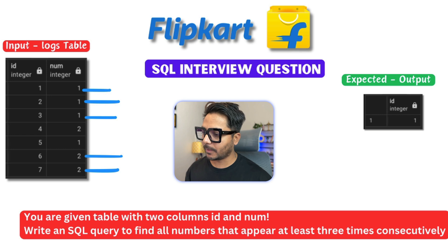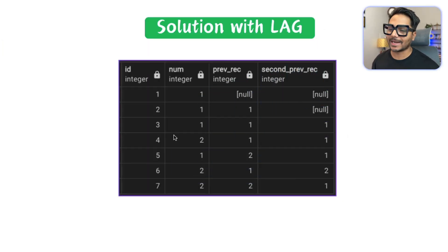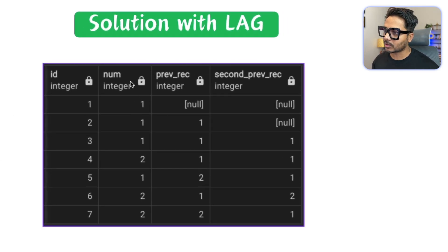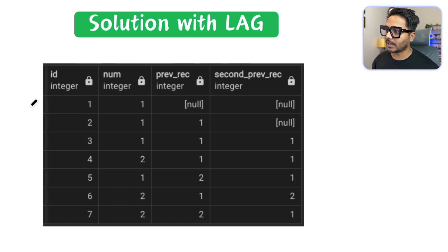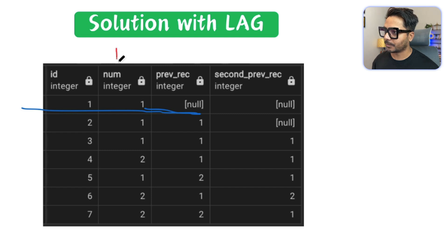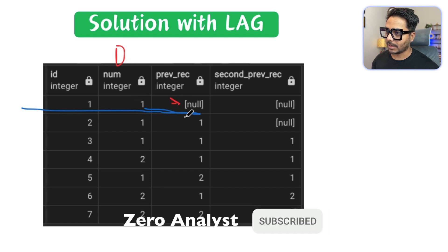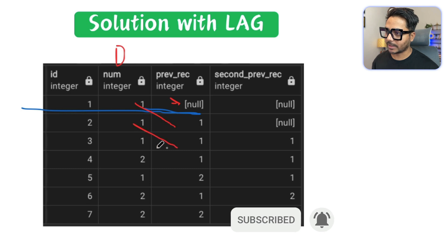To solve this problem we can use a window function called LAG — specifically lag one and lag two — to get the previous record and the previous-to-previous record. On the number column, I am using the LAG window function to get one previous record relative to the current row. If you are currently on the first row and using LAG on this column, you get null because there is no previous record.